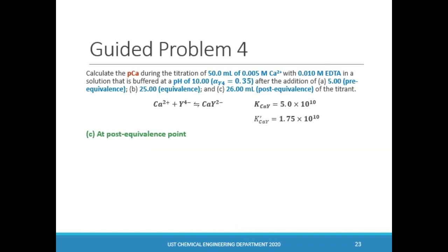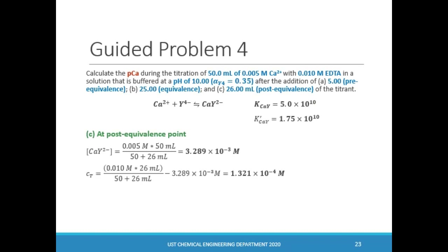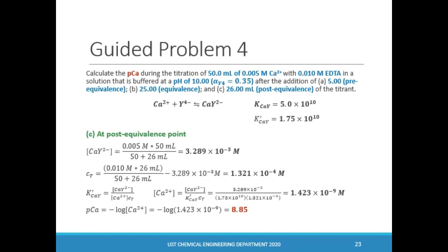Finally, at the post-equivalence region, a much lower concentration of free calcium is present and EDTA is already in excess. First, calculate the concentration of the calcium-EDTA complex using the total volume of 76 mL. Then, solve for the excess EDTA concentration by getting the difference of the initial EDTA in solution and the amount of EDTA used to form the metal complex, giving 1.321 × 10⁻⁴ molar EDTA. Using the K' expression to isolate the calcium concentration and substituting known values, we get 1.423 × 10⁻⁹ molar. Solving for pCa using the negative logarithm, we get 8.85. Performing these calculations for more points in each region allows us to establish the full titration curve for a given metal-EDTA system.